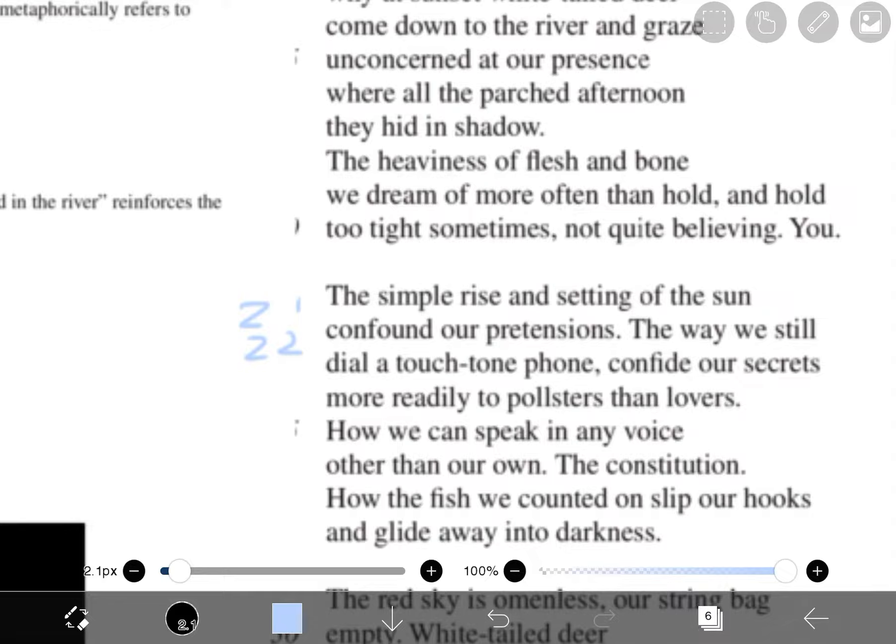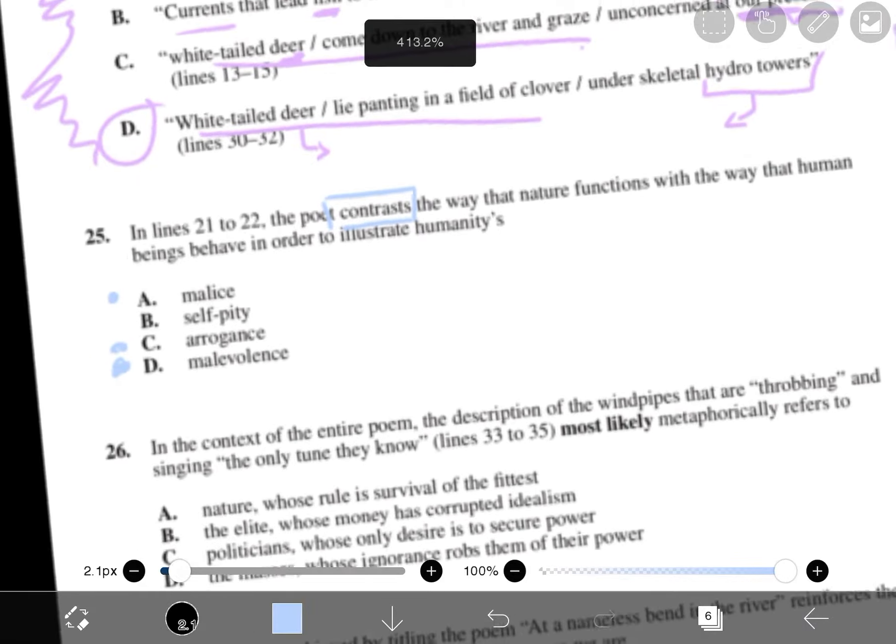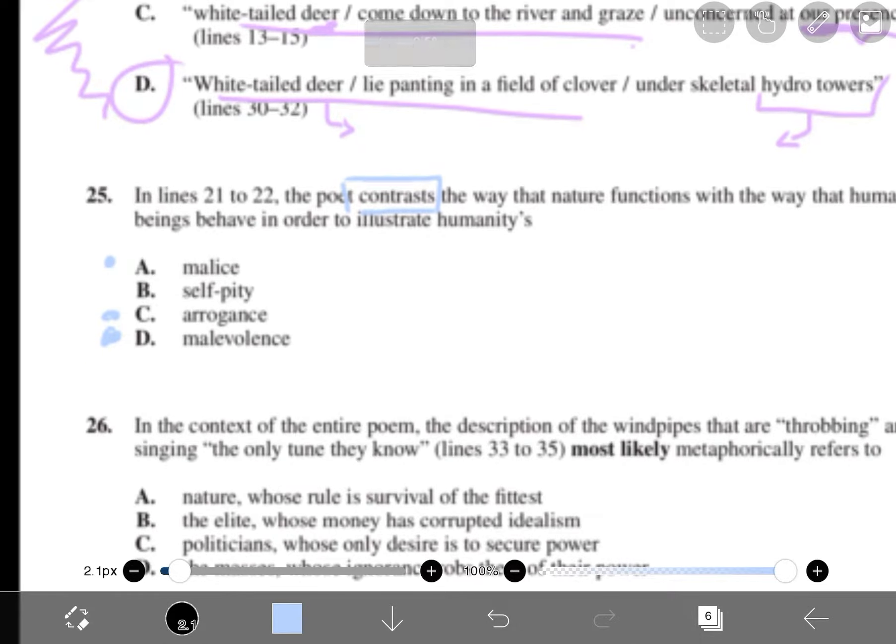I got it printed here. This is 21, 22. The simple rise and setting of the sun confound our pretensions. Confound means confuse. The way we still dial a touch-tone phone, confide our secrets. Just from these two lines, they don't say much. So what you want to do is read the entire context. So you get what tone this line is implying. More readily to pollsters and lovers, how we speak in any voice other than our own. So we got pretension here. Pretension. Maybe we're too pretentious. More than nature.